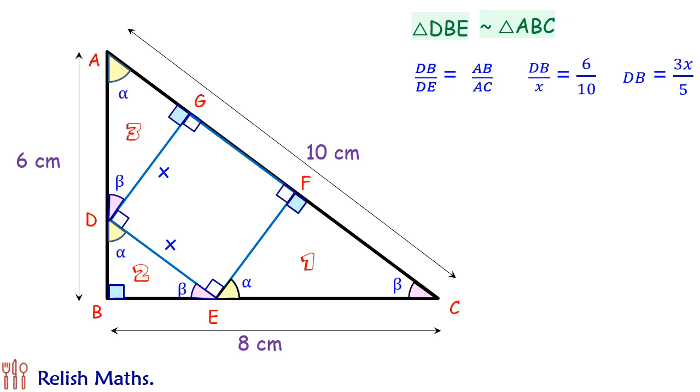Similarly, let's look at triangle number 3, that is triangle ADG. All the angles are same as of bigger triangle. Thus, it's similar to triangle ABC and the ratio of sides will be equal.